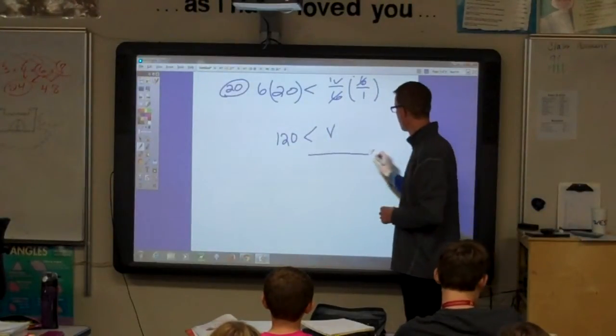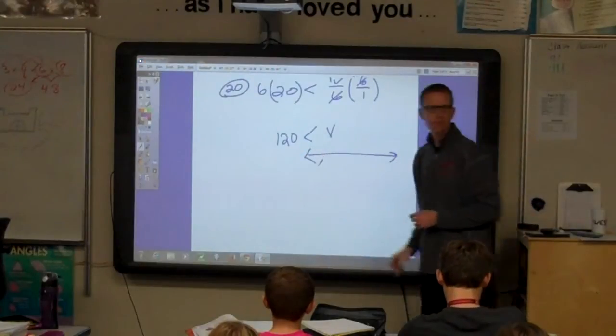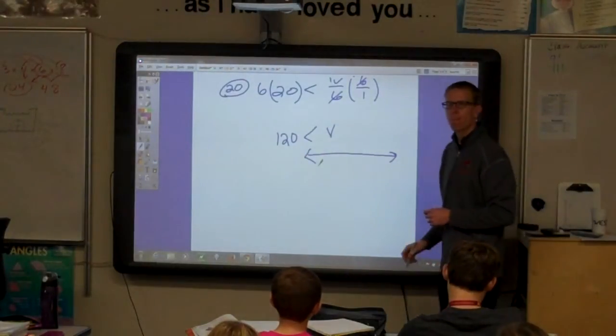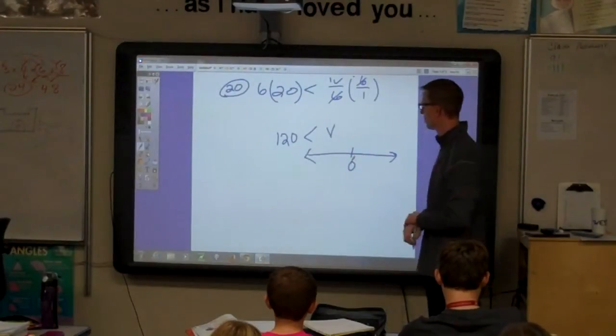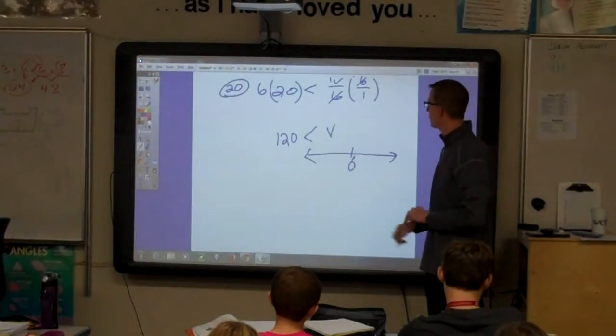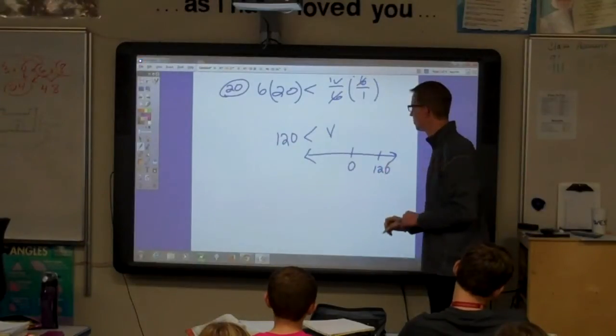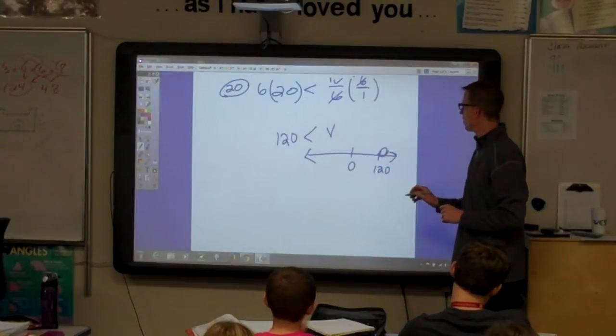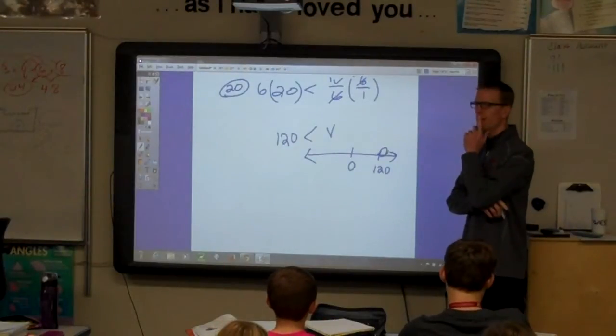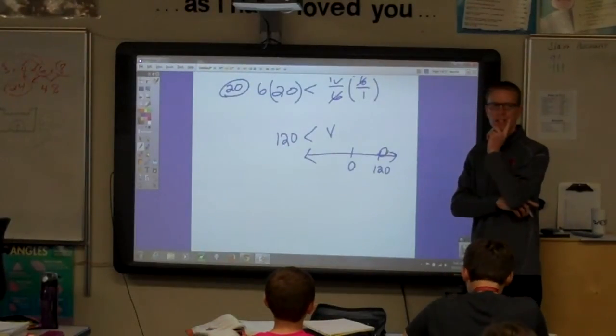How do we graph this? Open dot or closed dot? Open dot. And shade to the right or left? First, you put where the zero is. And then to the right, because it's 148. You put 120. And open dot. And it points to the left. Or the right. Right. Which way is this one written?